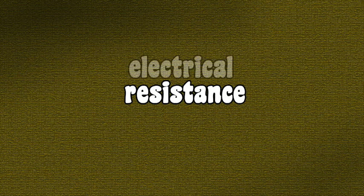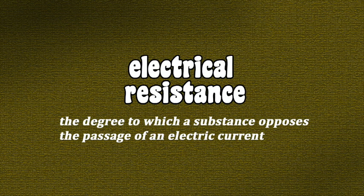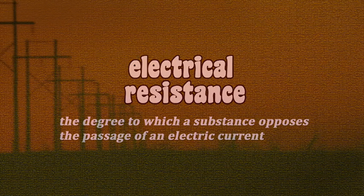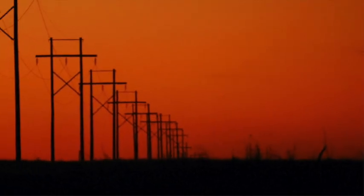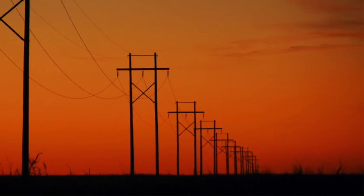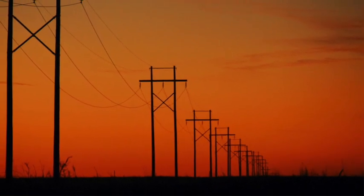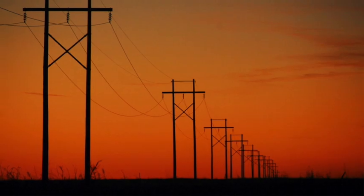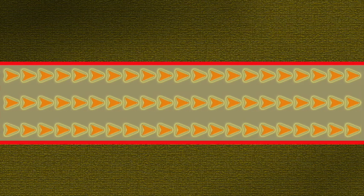When we talk about electrical resistance, we mean the degree to which a substance opposes the passage of an electric current. You know that electricity often travels through wires. The wires are conductors of electricity. To work well, a conductor must allow the electrical current to flow freely with little resistance. We say those wires provide good conductance.